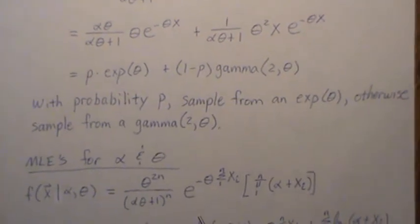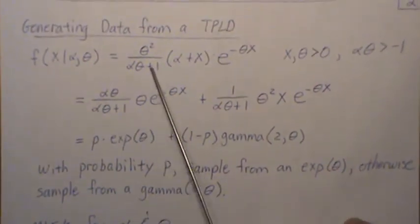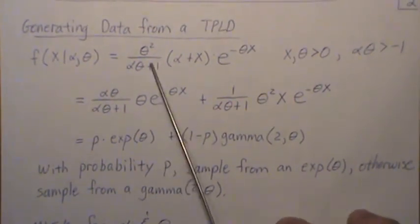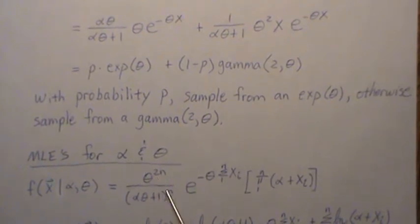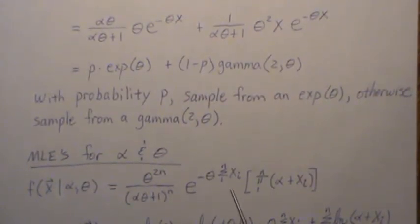Now, the MLEs for this, we're going to use Fisher's scoring method. We'll do this in steps. First, we need to find the likelihood or the joint distribution, which is the product of these n times. So that's why we get to the nth, and we're summing the exponents. This is the sum of the xi, and this is the product of the theta plus xi.